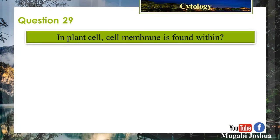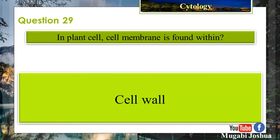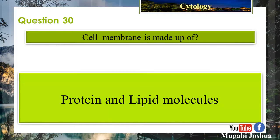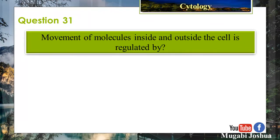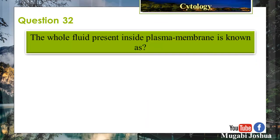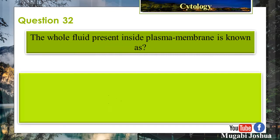Question 29: In a plant cell, the cell membrane is found within the cell wall. Question 30: The cell membrane is made up of protein and lipid molecules. Question 31: Movement of molecules inside and outside the cell is regulated by the cell membrane. Question 32: The whole fluid present inside the plasma membrane is known as protoplasm.